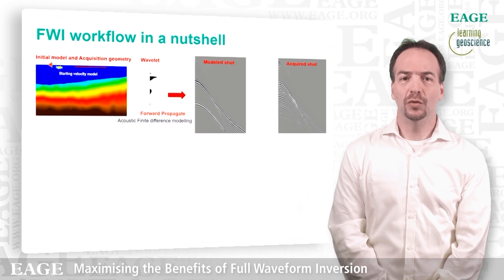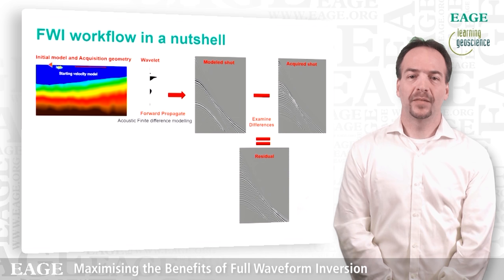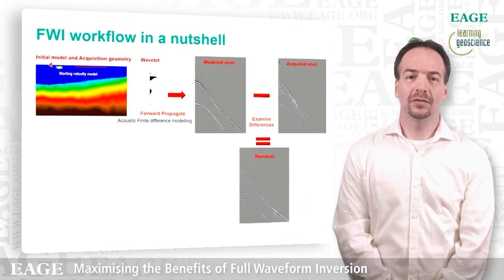The simulated shot at the moment is very simple because we start with a model that is extremely smooth, so we will have only the direct arrival, the diving waves and the water bottom multiple. We then compare this shot with our real shot and we derive something that we call the residuals. These residuals are what actually drive FWI. We want to minimize these residuals so that the shot computed on the computer will look more or less like the shot that we acquired in the field.